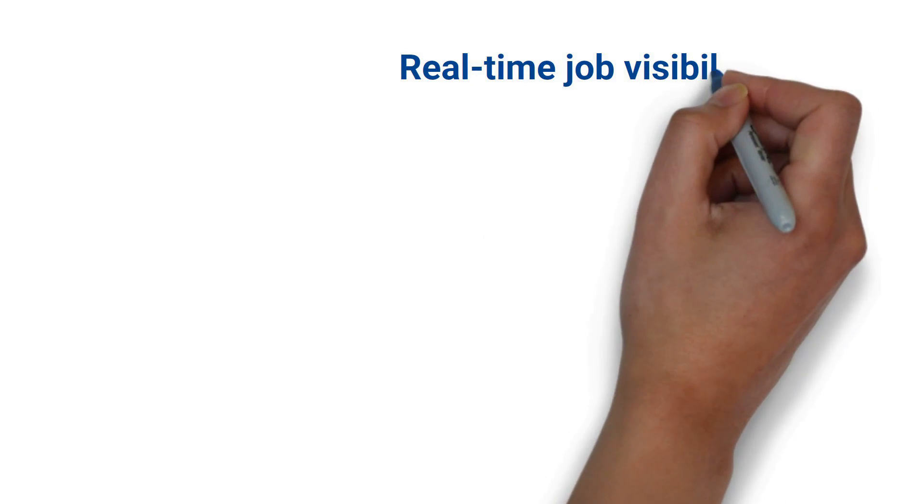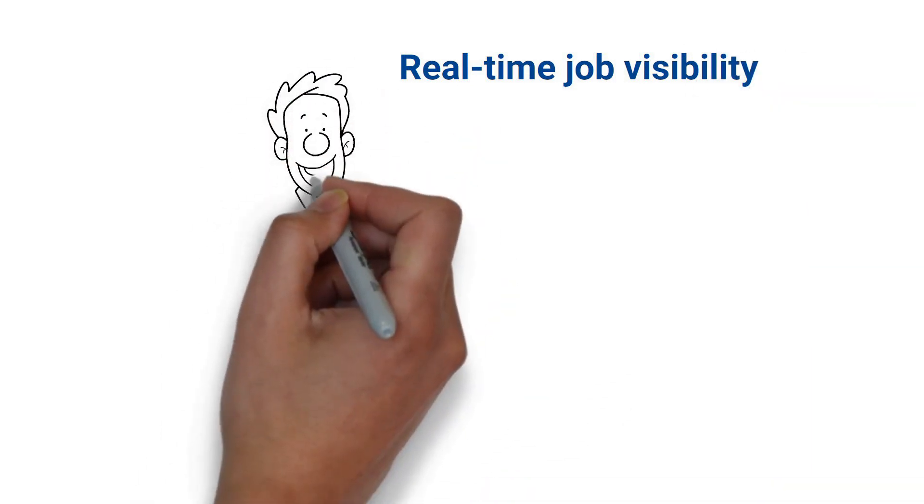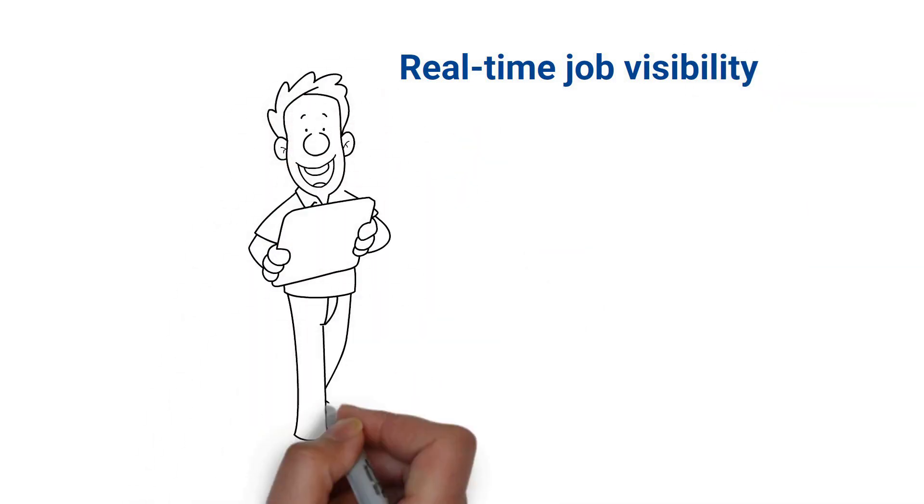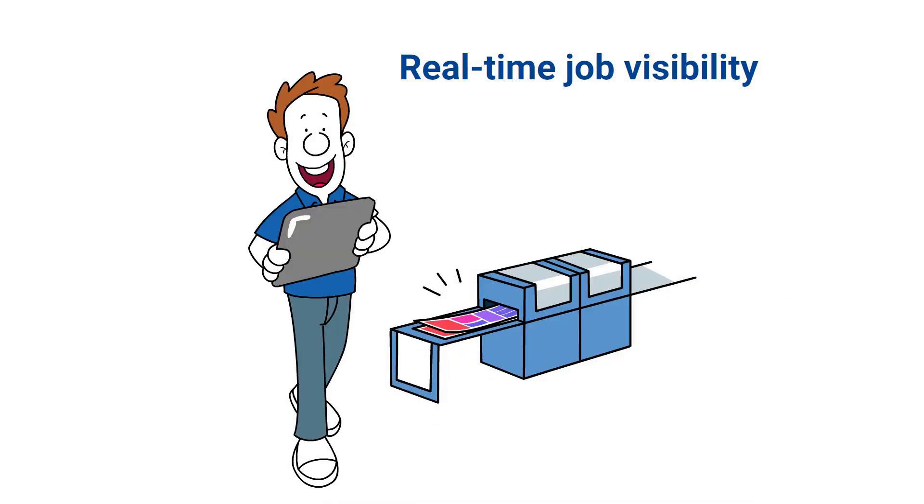Connex Line Control centralizes the job dispatching. You gain real-time visibility to the status and location of every job, enabling you to send the right jobs at the right time to the correct machine.